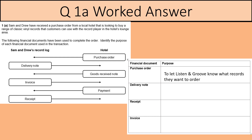Purchase order: to let Listen and Groove, the record company, know what records they want to order. So that's the hotel letting them know what they want to order. One mark.